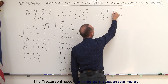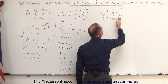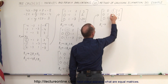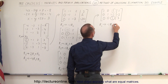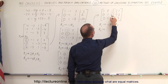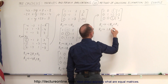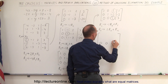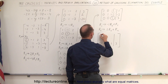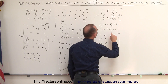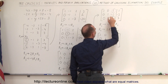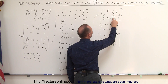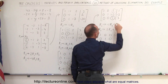Now we have a 1 in the third diagonal position and need to change the entries above it into 0s. We take the first row and replace it by negative 1 times the third row added to the first row. We take the second row and replace it by positive 1 times the third row added to the second row. The third row does not change: 0, 0, 1, 3. For the first row: negative 1 times 1 added to 1 is 0; negative 1 times 3 added to 1 is negative 2. For the second row: 1 times 1 added to negative 1 is 0; 1 times 3 added to negative 2 is positive 1.